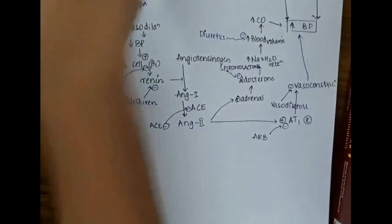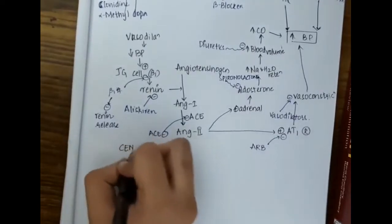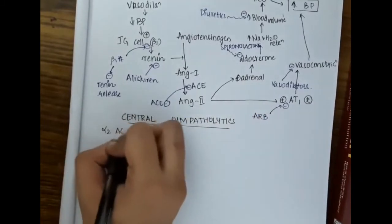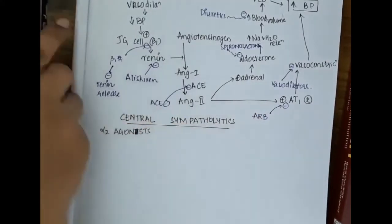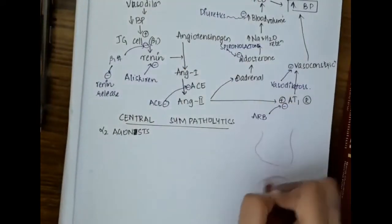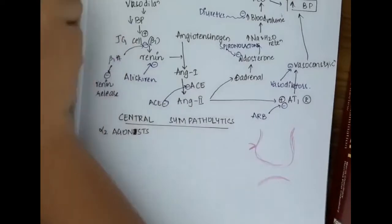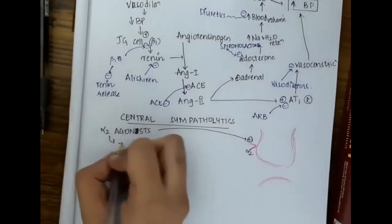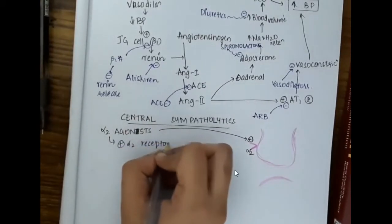Clonidine and methyldopa are central sympatholytics which are actually alpha-2 agonists. In the presynaptic neuron, there is an alpha-2 receptor. Normally through this presynaptic membrane, noradrenaline, dopamine, and 5-hydroxytryptamine are released. But when these alpha-2 receptors are activated, this release of noradrenaline, dopamine, and 5-hydroxytryptamine is blocked.